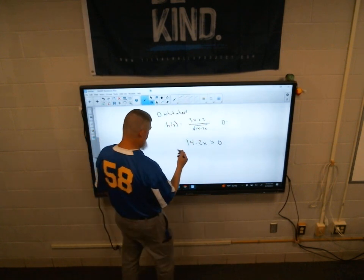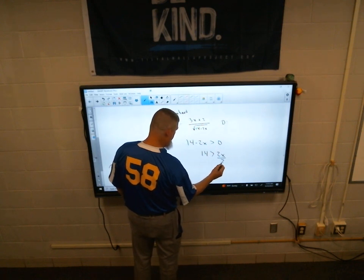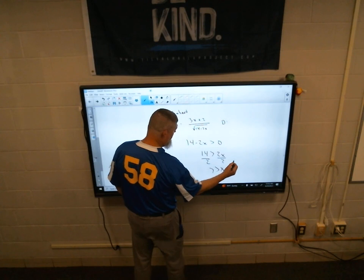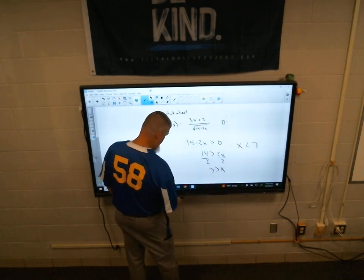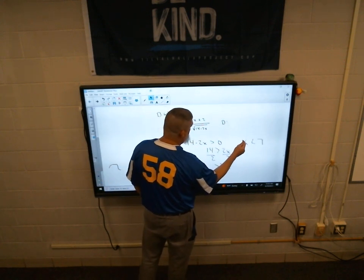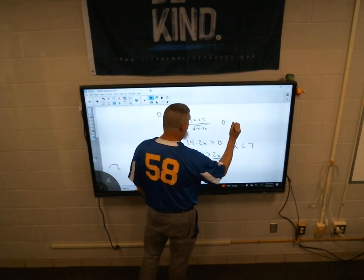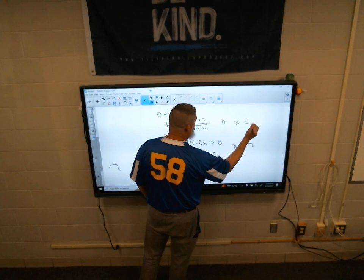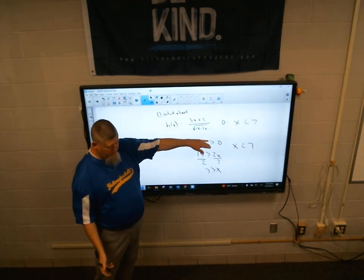So you actually follow both rules. You set your square root, but it just has to be greater than zero, because it can't equal zero. And then you would solve. So let's see here. Subtract 2x, so 14 greater than 2x divided by 2. x has to be less than 7. Because if x was equal to 7, my denominator would be zero, and that's not allowed.